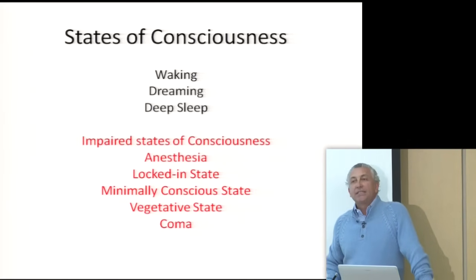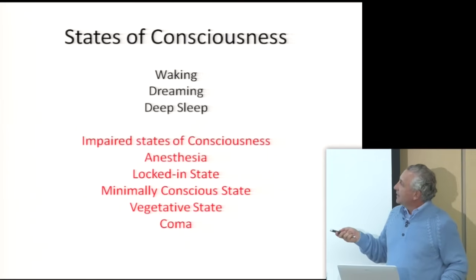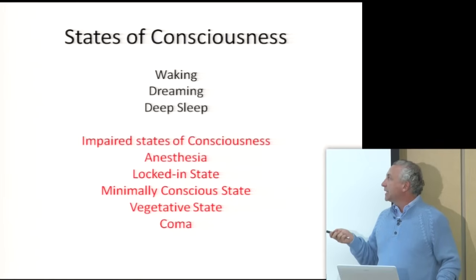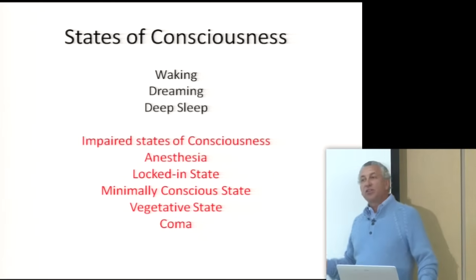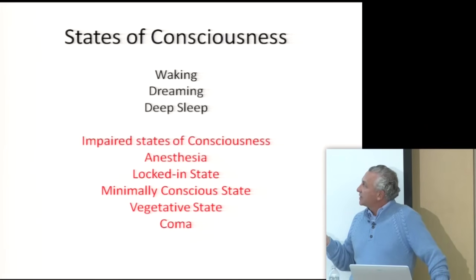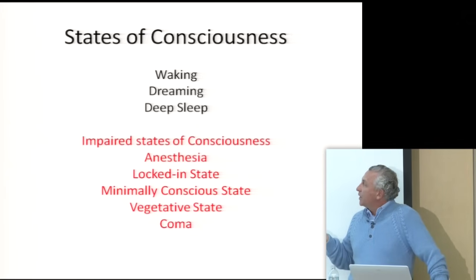There are what we call states of consciousness. You can be waking, dreaming, or sleeping — the usual three states. These states exist not just at the experience level but also on the physiological level. Every one of these states has a corresponding physiological activity. Your brain waves during waking are different than during dreaming or deep sleep.